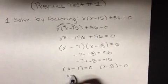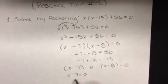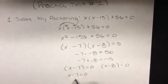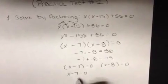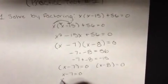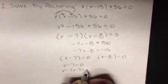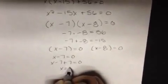I will take x minus 7 plus 7 equals 0 plus 7 to cancel the negative 7 and make it positive, so x equals 7.